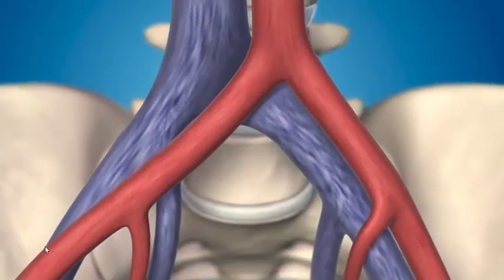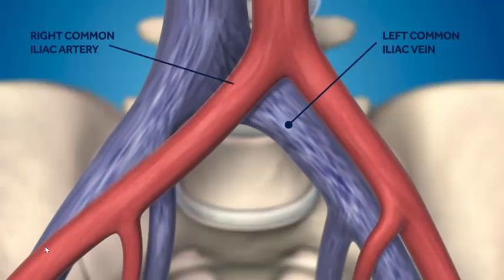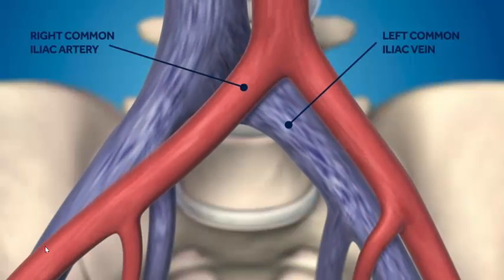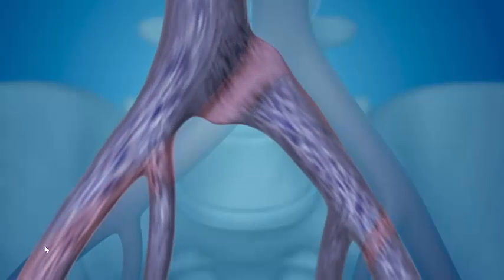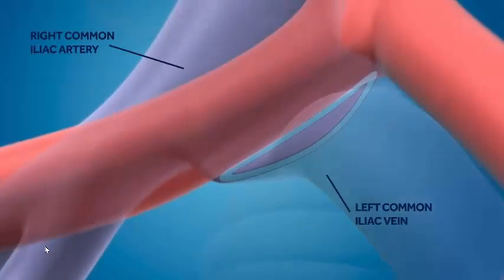In May-Thurna Syndrome, the left common iliac vein is compressed by the right common iliac artery. This compression causes reduced blood flow through the vein, which can lead to swelling and pain for some patients.